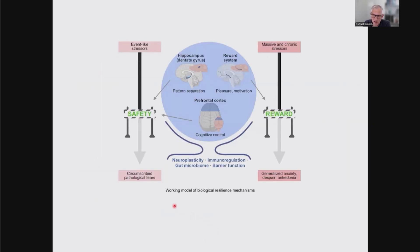This is a very preliminary working model of biological resilience mechanisms in the brain. The model is centered on the functions of the hippocampus, in particular the dentate gyrus, the reward system, and the prefrontal cortex. These areas are affected and modulated in their function by the immune system and the gut. An important role is also played by the integrity of the barriers between the gut, the body, the blood, and the brain. And all these areas show a decent amount of neuroplasticity.